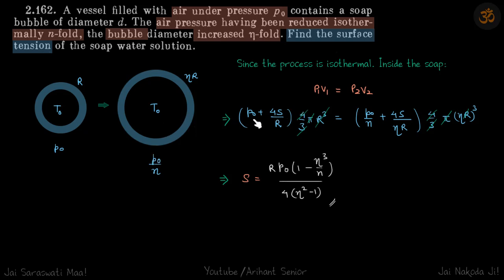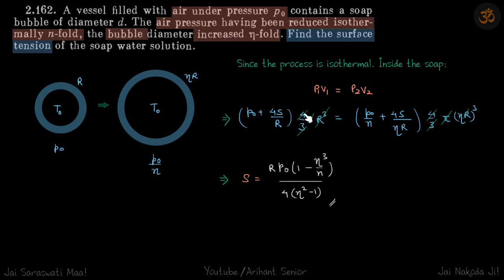So p1v1 = p2v2. The initial pressure inside is p0 plus 4s/r, and the volume is (4/3)πr³. The pressure of the bigger bubble is p0/η plus 4s/(ηr), and we use the volume of the bigger bubble. Solving this equation, the only unknown variable is s, and we find its value.